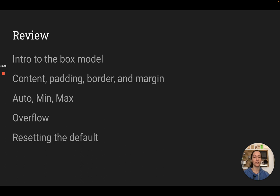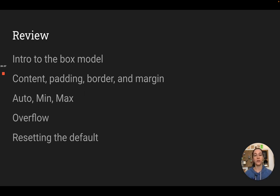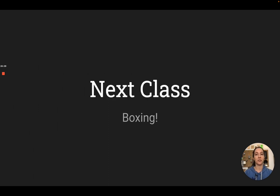So what have we learned today? We've learned about boxes — how we determine how big elements are inside of HTML and CSS. We do that by adding up the width and height of the content, the padding, the border, and the margins. All of that summed together is the size of your element. We've also talked about auto for centering things, min and max to allow things to grow and shrink, overflow, and resetting the defaults. Next time in class we'll work with boxes, and I will see you then. Bye.